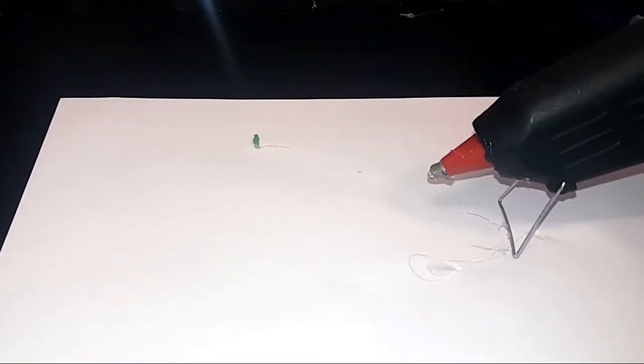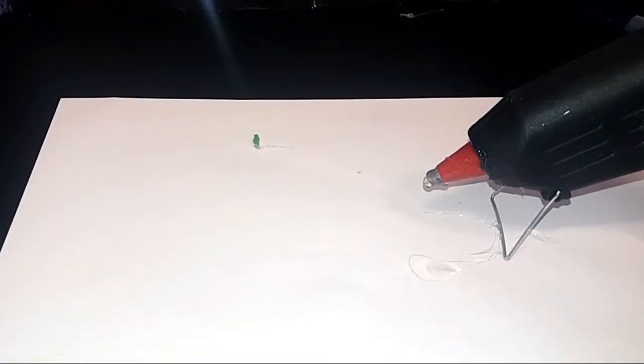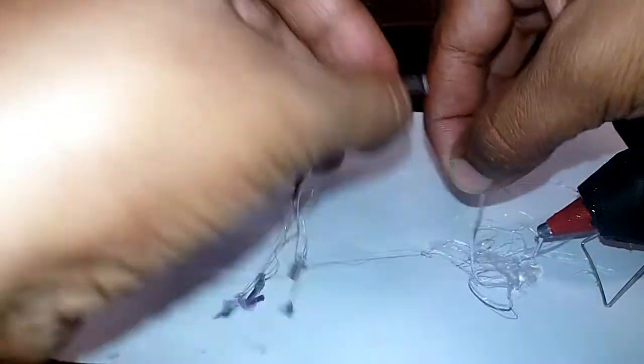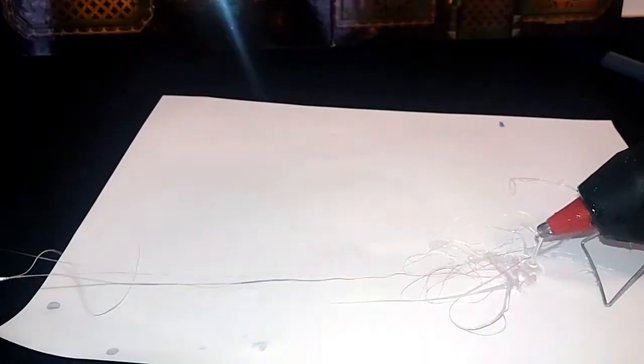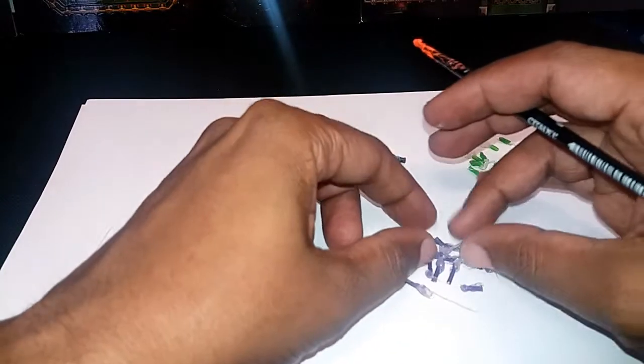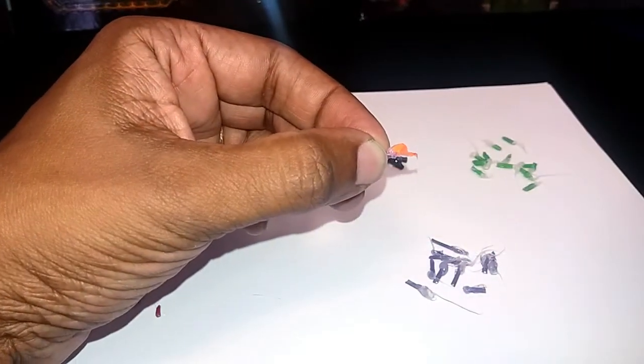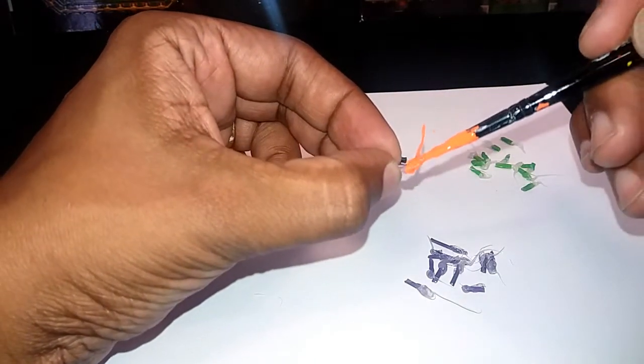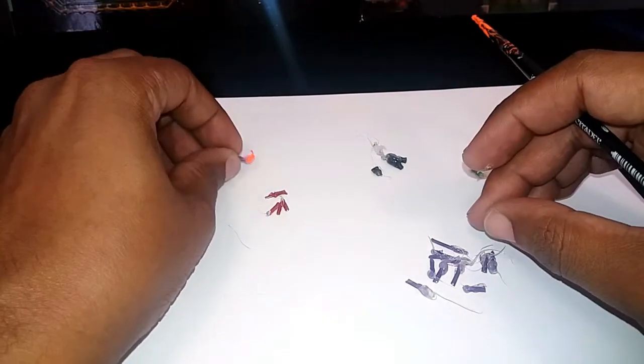The thing I like about this is you get random effects each time. It does look very different. Once they're done and cooled, just take your colors that you want to use for the flame and start painting just the top section. I'm just using the orange and just going right there. Leave it to dry.